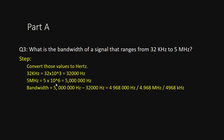You need to remember the conversion table: kilo, mega, tera, nano, pico. For kilo, multiply by 10 to the power of 3. So 32 kilohertz equals 32,000 hertz. For mega, multiply by 10 to the power of 6. So 5 megahertz equals 5,000,000 hertz. Now both units are the same — hertz.